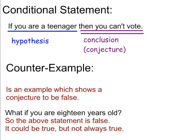Here's another conditional statement: if you're a teenager, then you can't vote. Well, what if you're 18 years old? You can vote in America at 18 years old, so that's not a true statement. It could work if you're 15 years old, but the statement says 'you're a teenager' — 15 is a teenager and 18 is a teenager. Since you can come up with an example that shows it's false, the statement entirely is false.